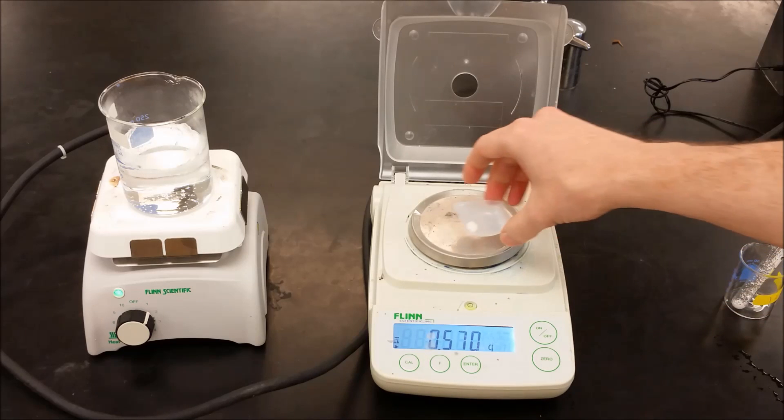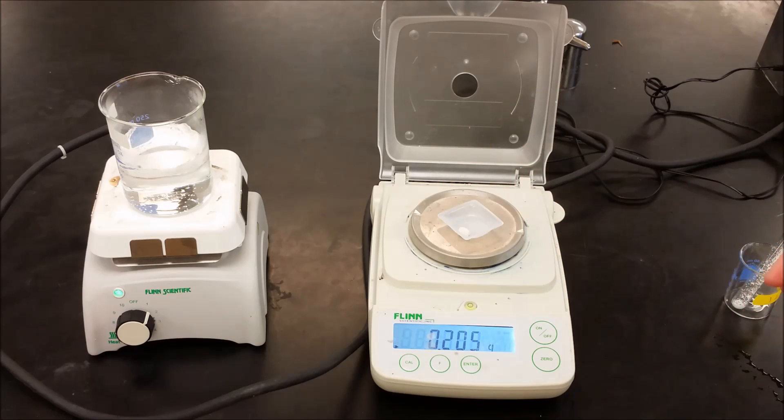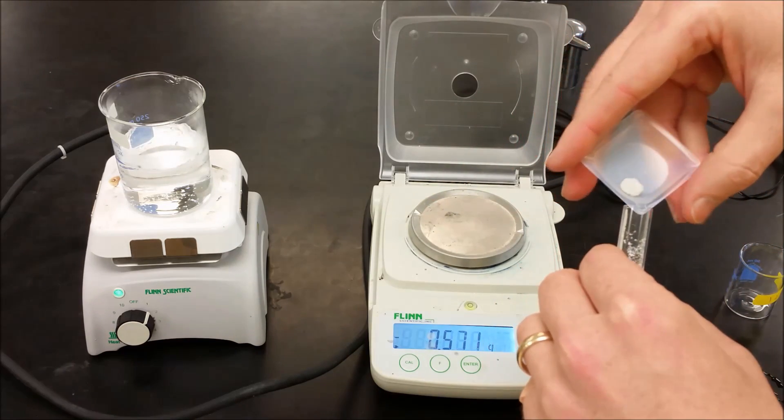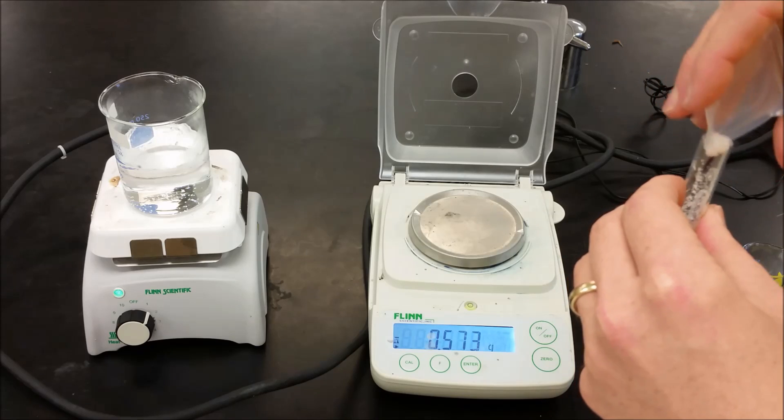All right, we're going to mix that with 0.2 grams of the carbonate version and get that in the same test tube, and then we're going to melt the two together. When we melt them together, there's going to be a chemical reaction between them.